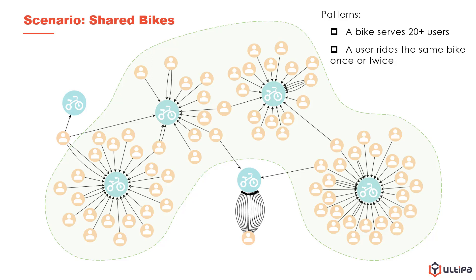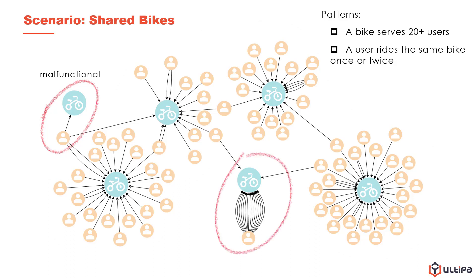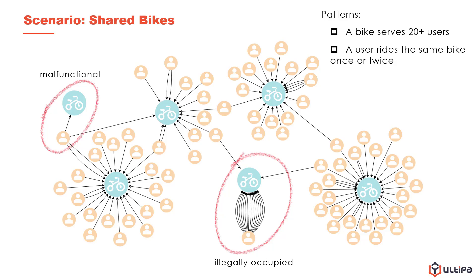The rest of bikes and users are the cases that should arouse the interest of the cycling operator. Like the bike on the upper left corner, which is rarely ridden, might be malfunctional and cannot provide service. And the bike in the center of the graph with intensive edges from the same user might be illegally occupied.